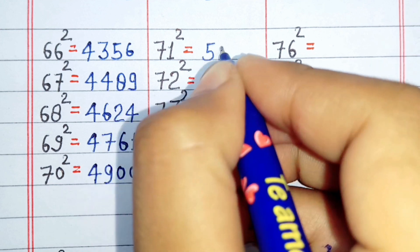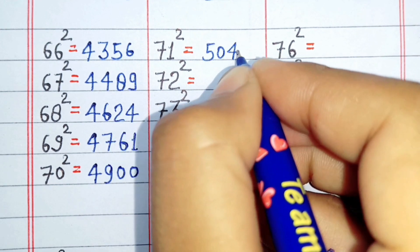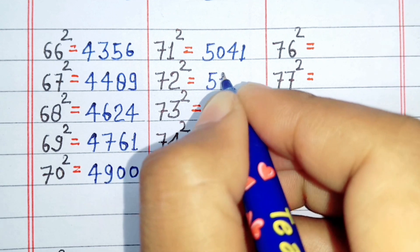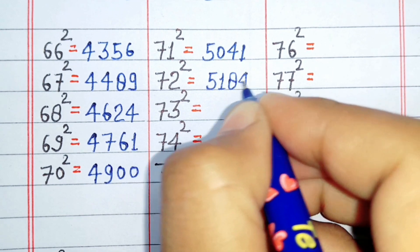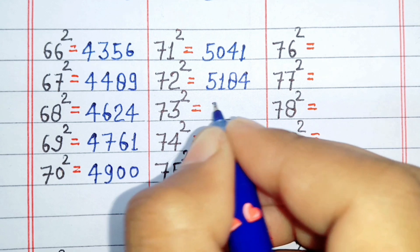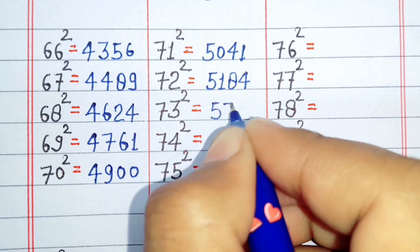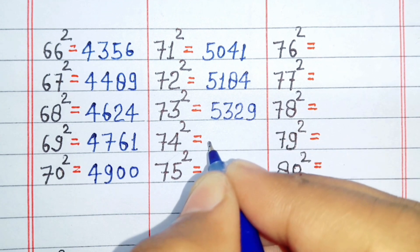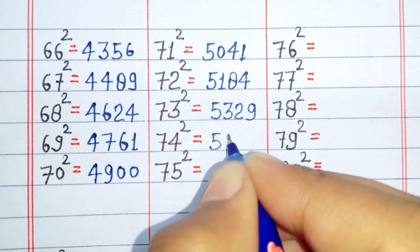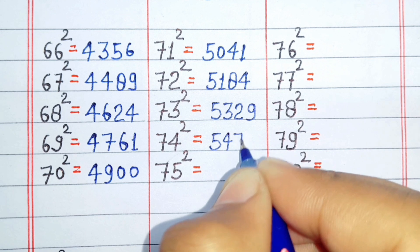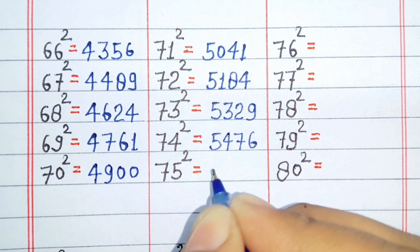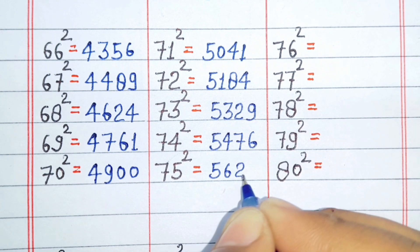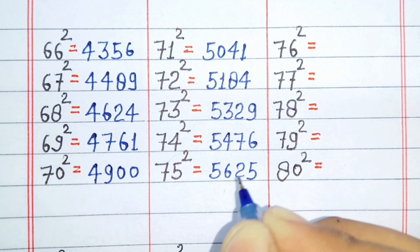Square of 71 is 5041. Square of 72 is 5184. Square of 73 is 5329. Square of 74 is 5476. Square of 75 is 5625.